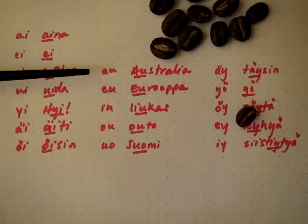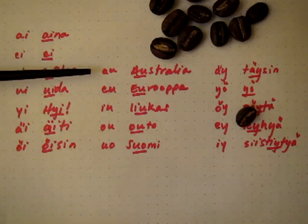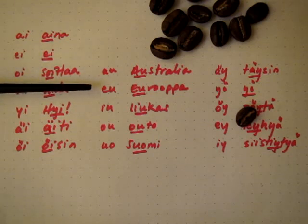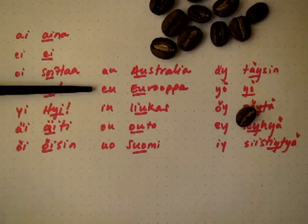Au, au, Australia, Australia. Eu, eu, Eurooppa, Eurooppa.